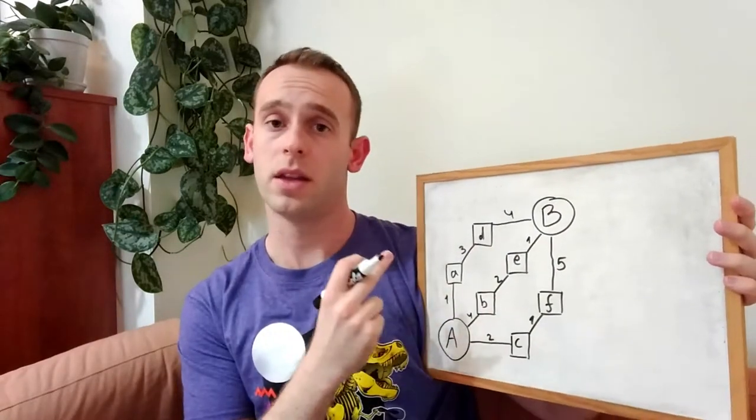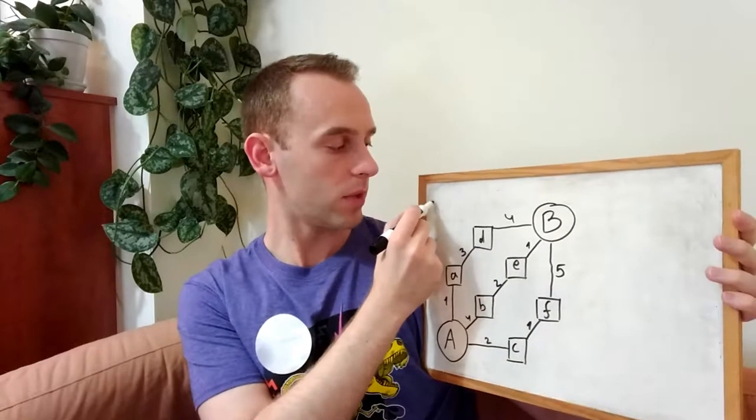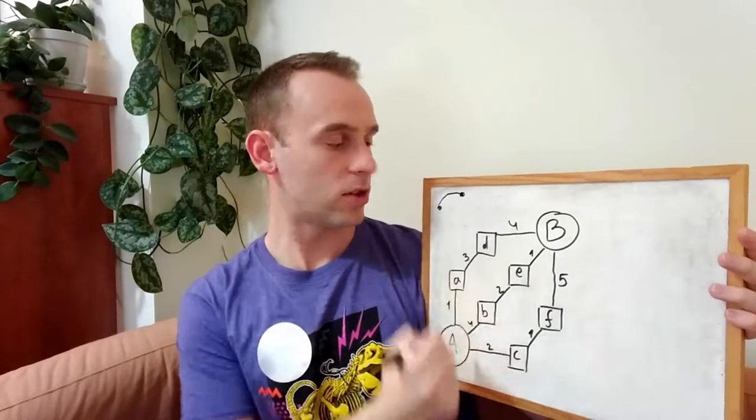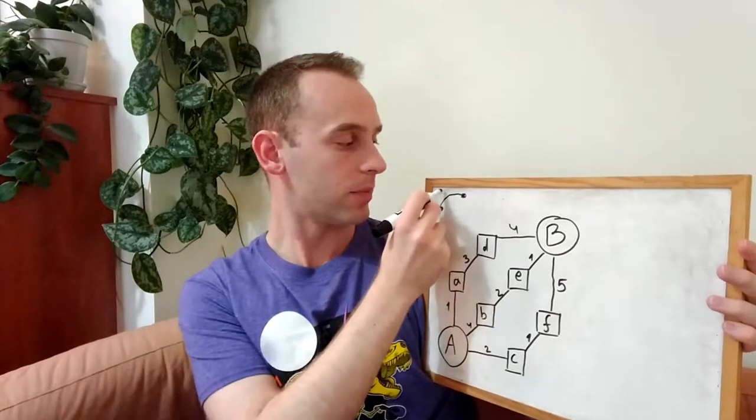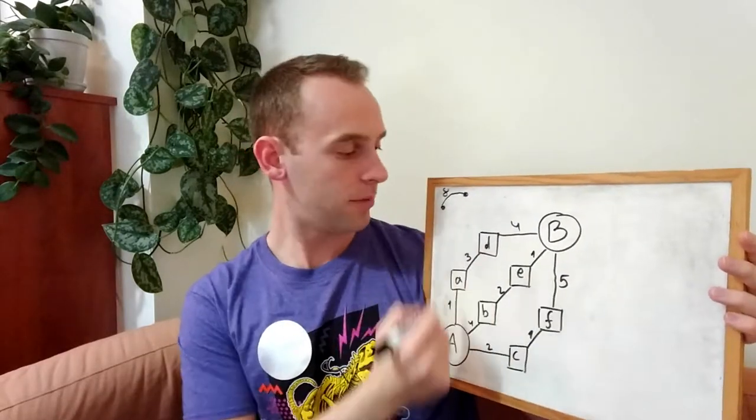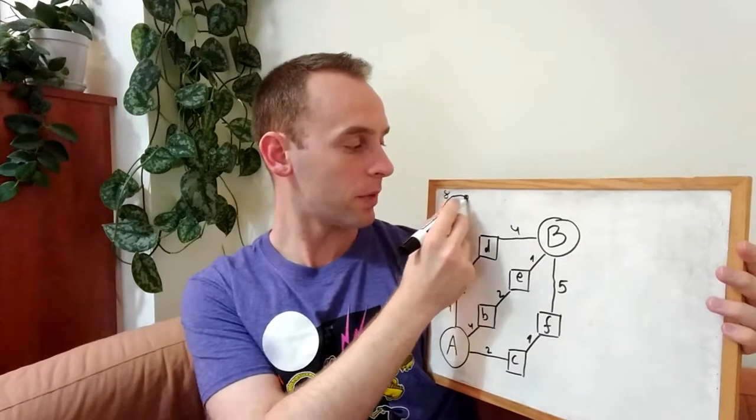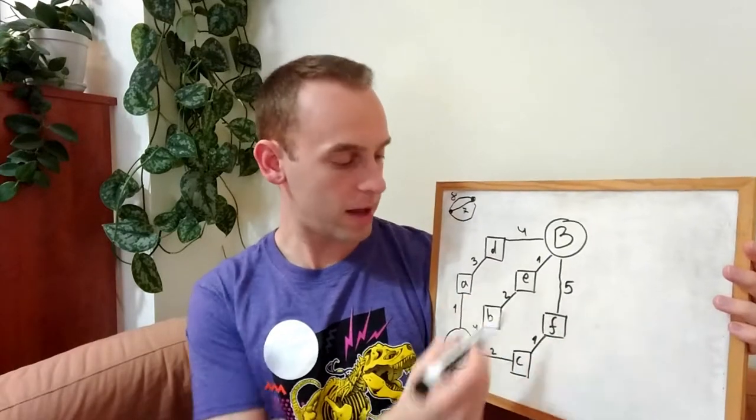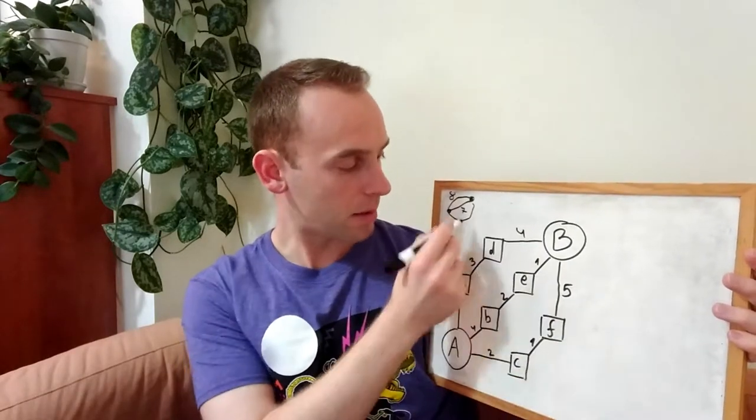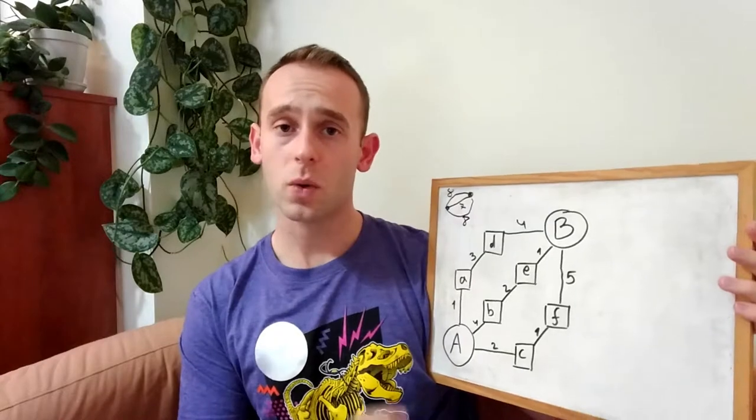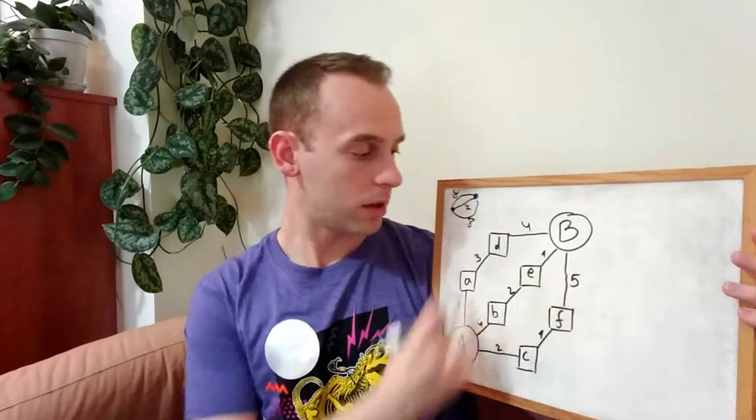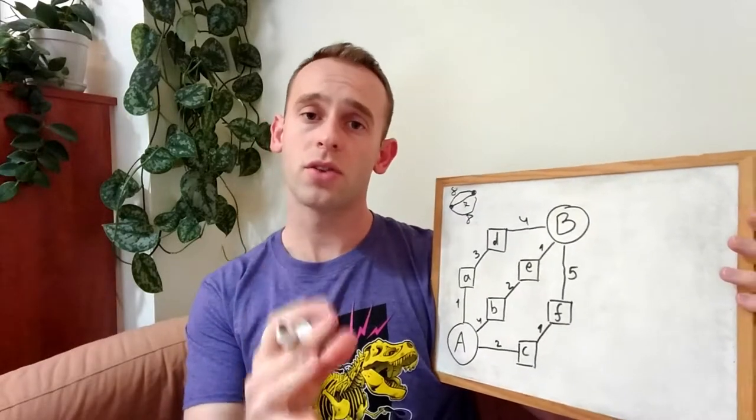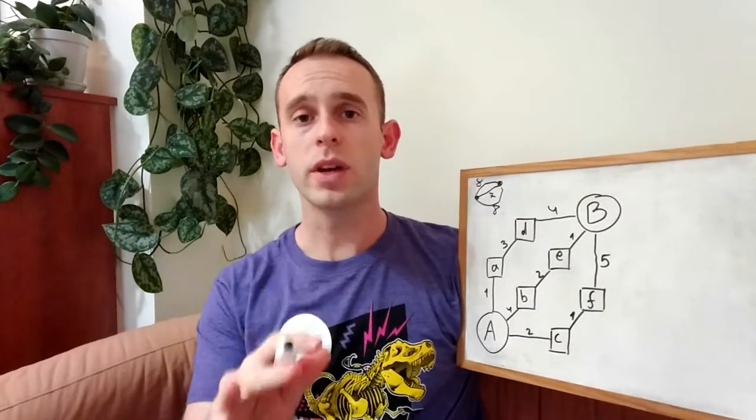And this path is seven. So I will make a small sketch of this graph showing the distances of each path. Starting at point A, if we go at the top path, we'll get a path of eight. If we go at the middle path, we'll get a path of seven. And if we go through the lower path, we'll again get a path of eight. So the shortest path from this graph is actually the middle path, and today we'll see how Dijkstra algorithm will find this path.